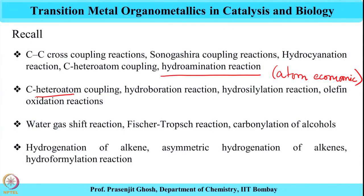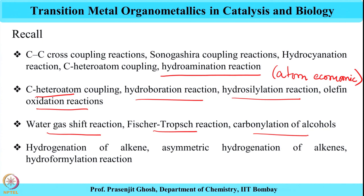Along the same line, we have looked at other very useful applications of transition metal organometallic chemistry, particularly carbon-heteroatom coupling, hydroboration reactions, hydrosilylation reactions, and olefin oxidation reactions. We have also looked at some very important industrial processes like the water-gas shift reaction, Fischer-Tropsch synthesis, and carbonylation of alcohols. We have also looked into hydrogenation reactions and their asymmetric forms as part of the previous course, covering applications of transition metal organometallic chemistry in the world of chemical catalysis.